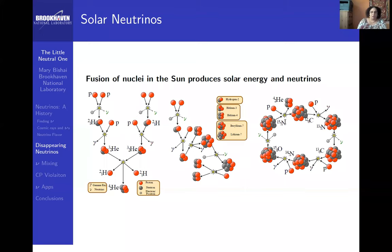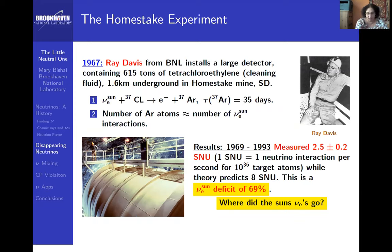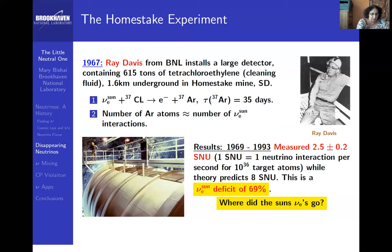There were many solar neutrino experiments. One of the most successful is what we call the Homestake experiment, carried out by a physical chemist. If there are chemists or chemical engineers on this call, this is where neutrino physics touches on a lot of things. Here, a lot of neutrino experiments involve chemistry and complicated chemical processes. Ray Davis, a physical chemist at Brookhaven, installed a large detector containing about 615 tons of tetrachloroethylene — a cleaning fluid.